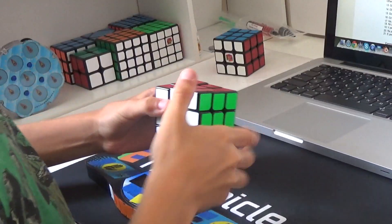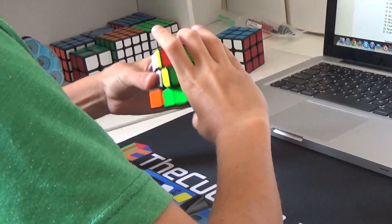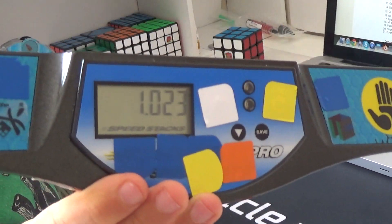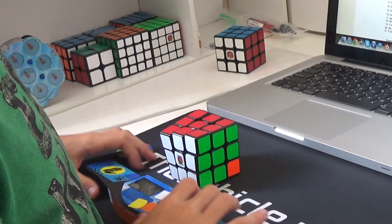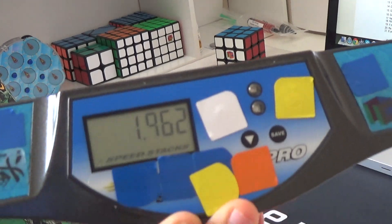1.23 A perm, 1.02 A perm. Messed up Y perm, 1.96.